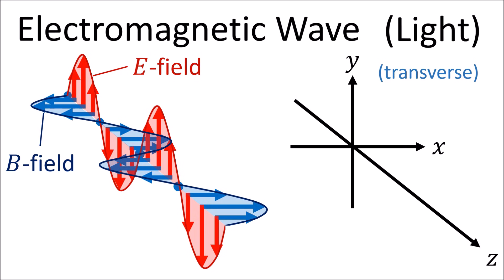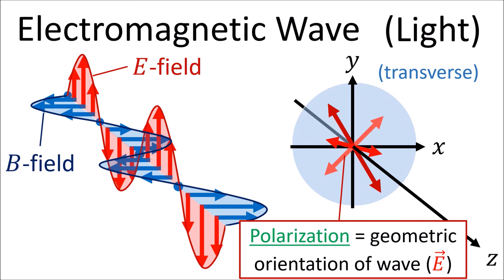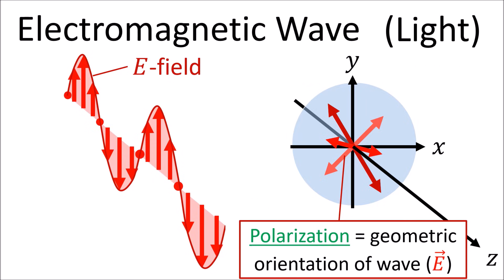If an electromagnetic wave is traveling in the z direction, the wave can oscillate in the xy plane perpendicular to the direction of travel, but the wave cannot oscillate in the z direction, parallel to the direction of travel. The polarization of a given electromagnetic wave is the geometric orientation of the wave. We only use the electric field E to define the polarization of an electromagnetic wave, so we ignore the magnetic field when talking about polarization.